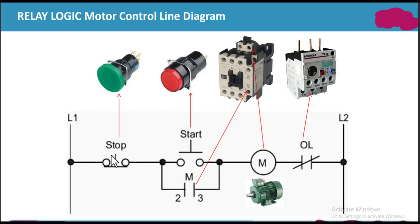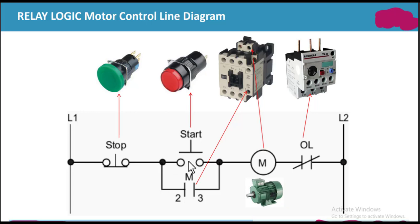This is the stop switch, which is a normally closed switch, so current can flow through it. This is the start switch, which is normally open — it is a push button, so normally current cannot flow through it. When we press this switch it will be turned on and then current can flow through it.